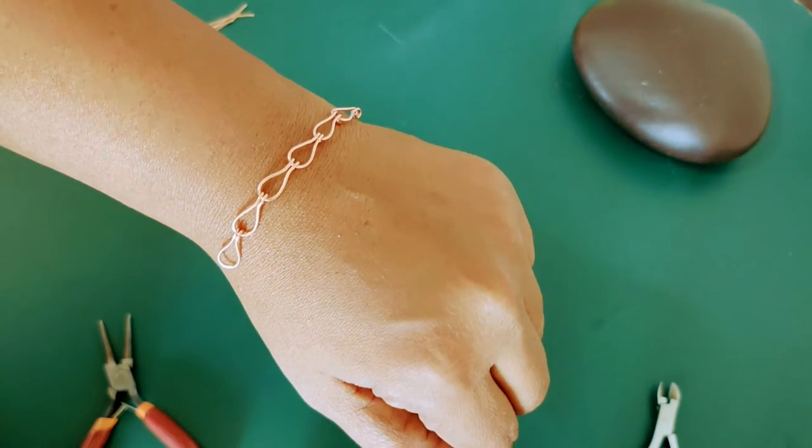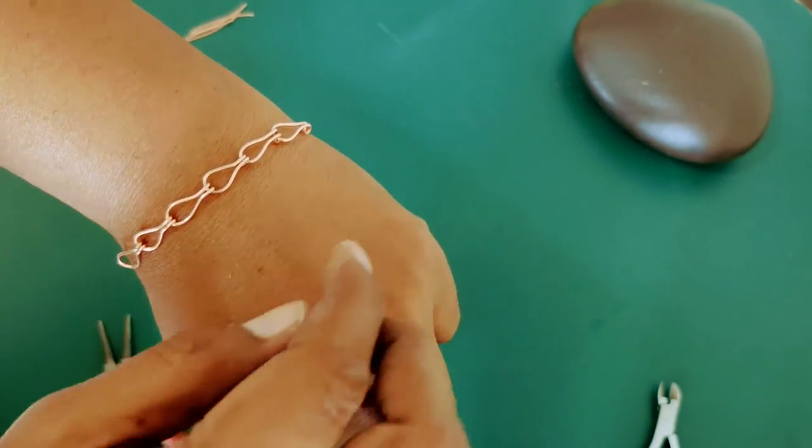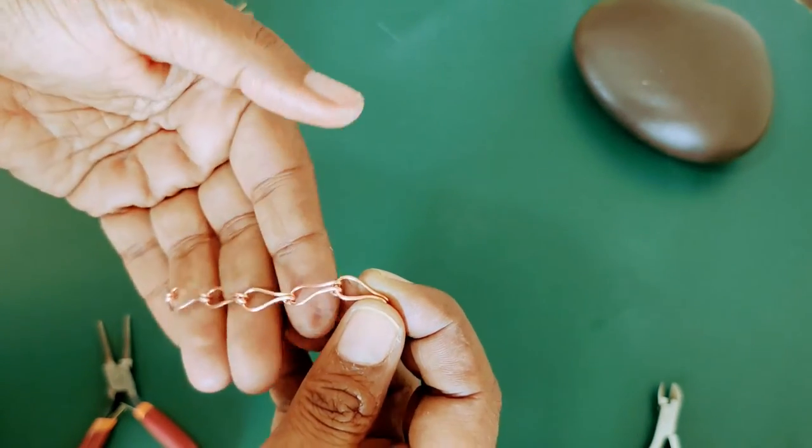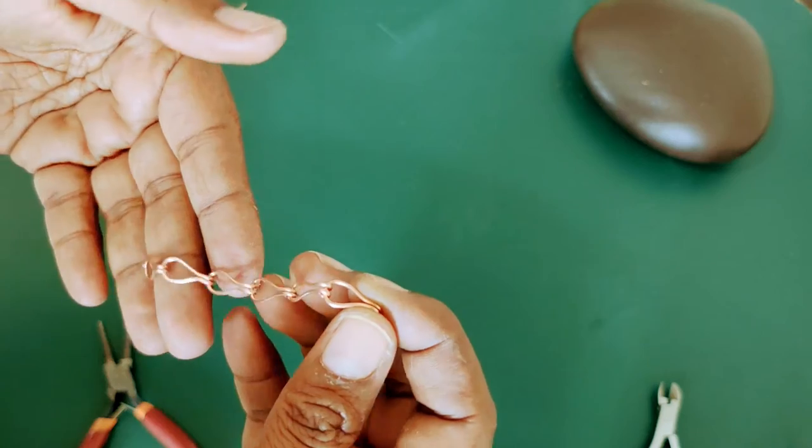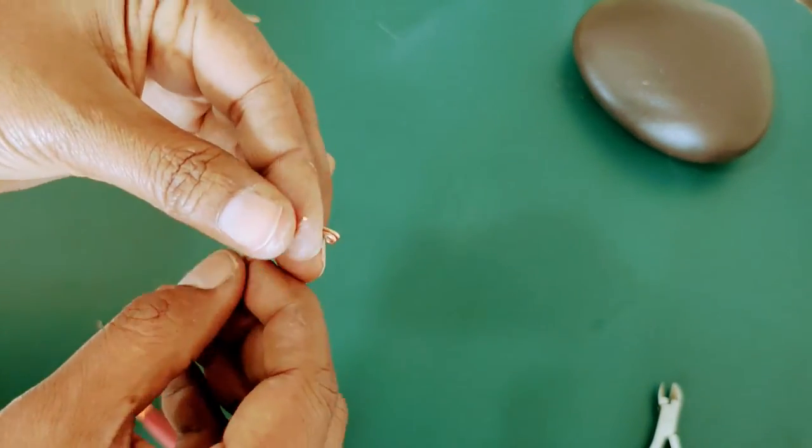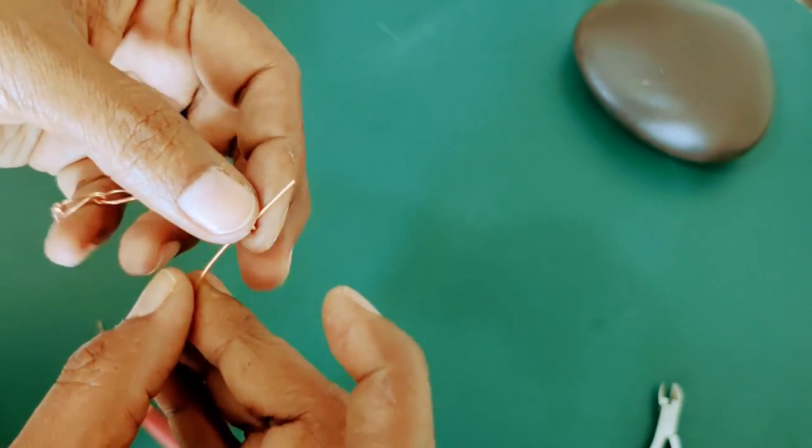See how pretty it looks. You can use it as a bracelet, you can use it as a connector also. So if you're making a pendant with any other cord, you can use this as a connector. Super easy. Also today I will show you how to make a clasp. So this is it.